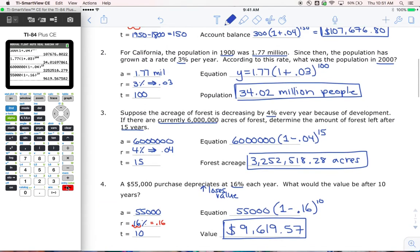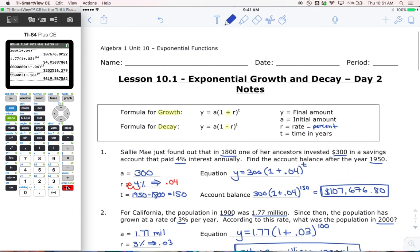The summary for today's lesson - biggest thing is it's got to be growth. If it's going to be growth, you've got to use a plus sign. If it's going to be decay, use that minus sign.